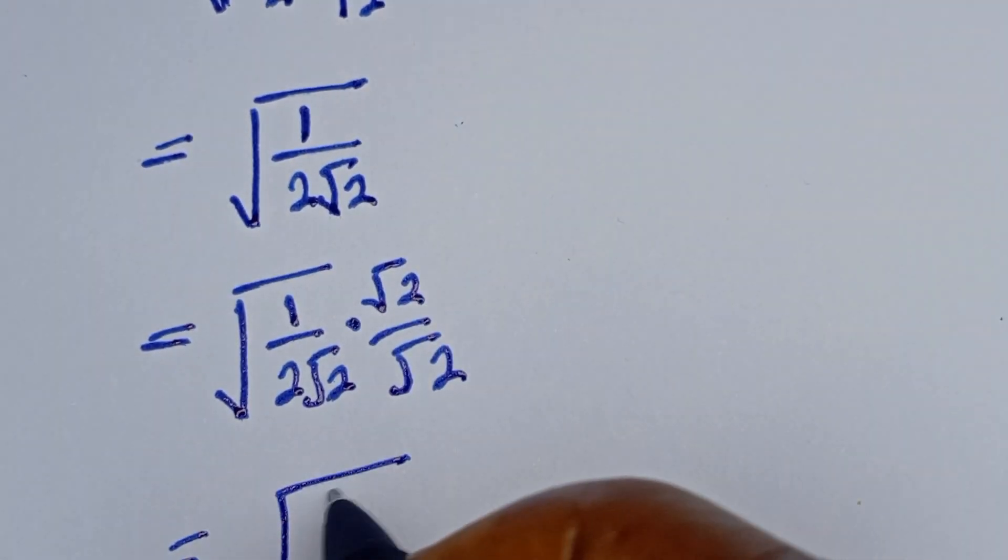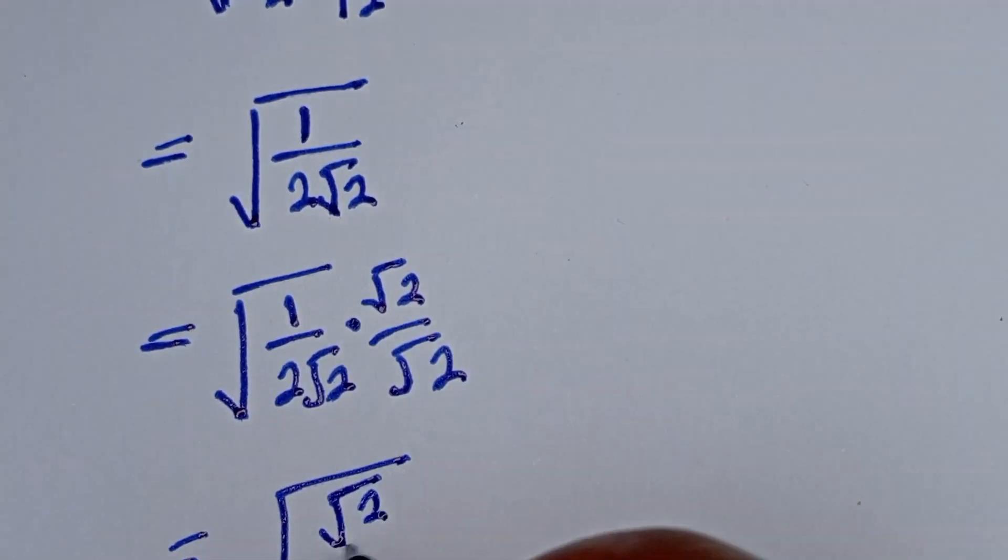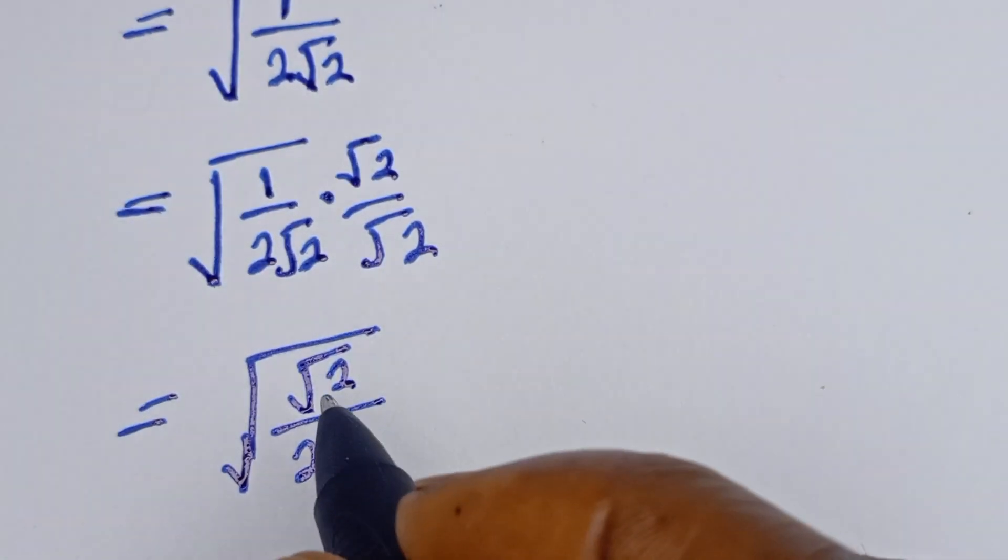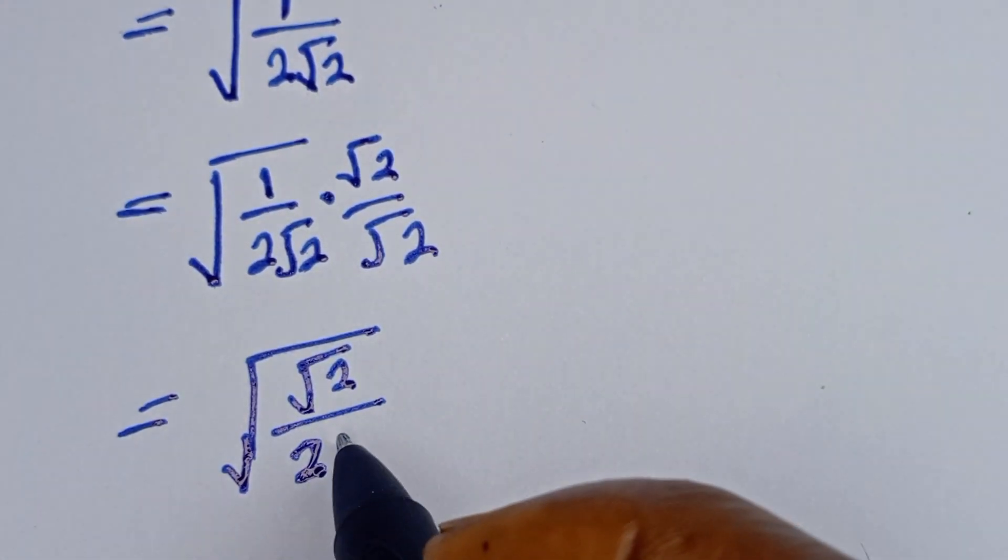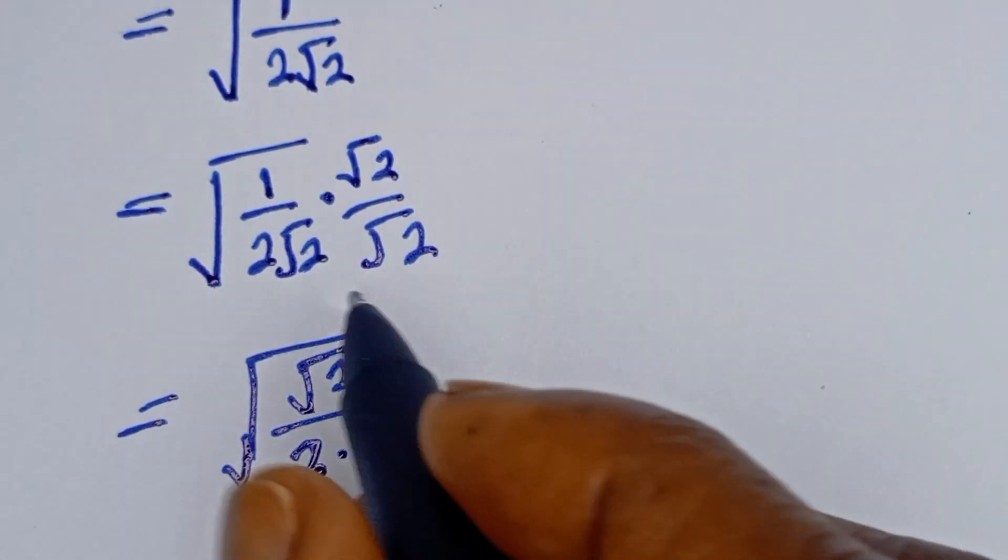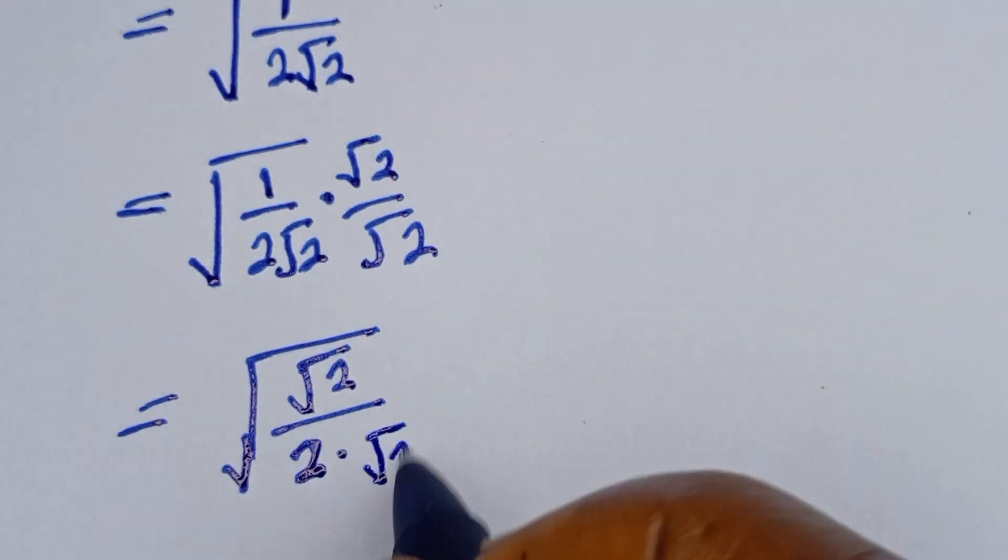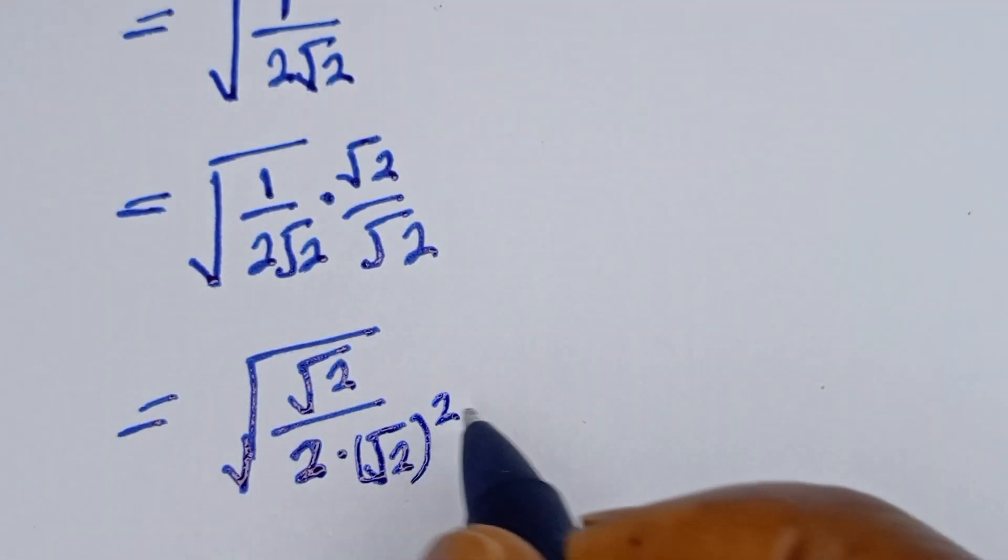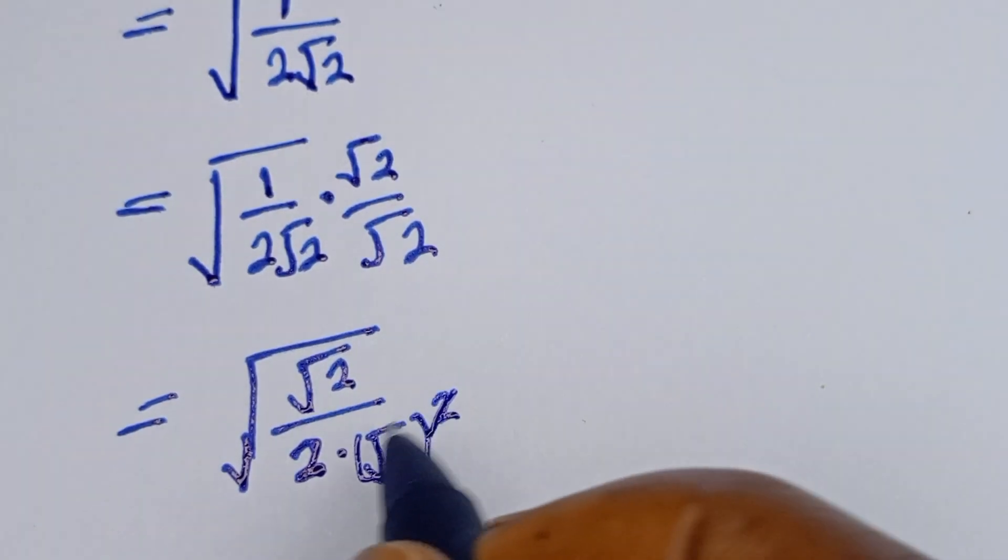1 times root 2, this is root 2, divided by 2, divided by 2 multiplied by root 2 squared. This will cancel this.